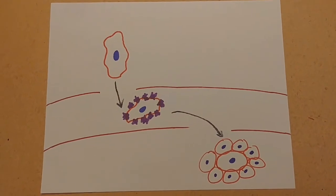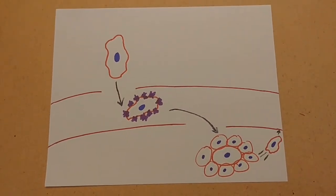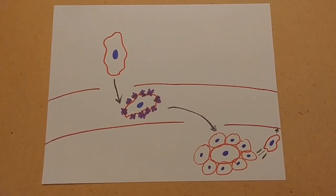These cells can remain dormant and undetected in these microenvironments for up to 10 years before growing and invading once more.